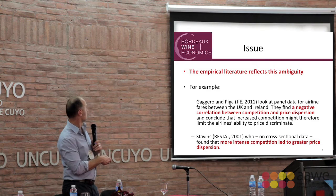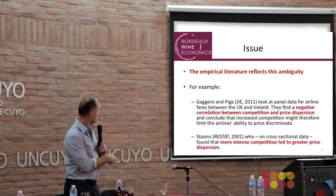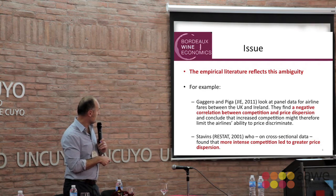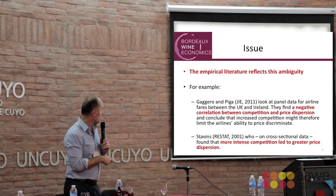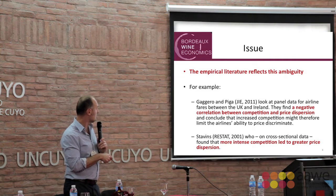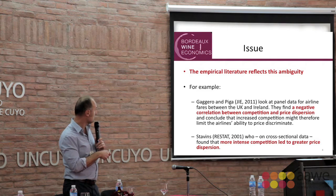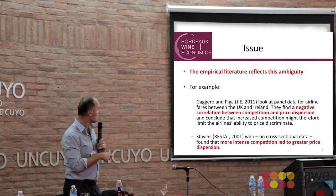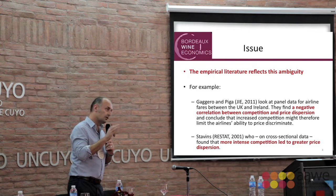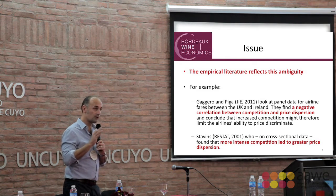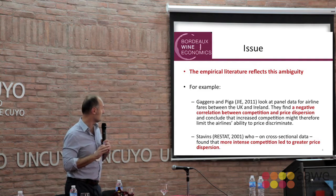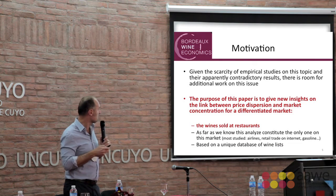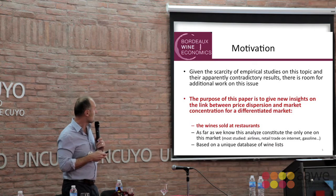In this literature, I just took two examples about the airlines market. In this paper by Stavins in the Review of Economics and Statistics in 2001, more intense competition led to greater price dispersion. But in the same market — airline tickets — a negative correlation exists between competition and price dispersion. So the theoretical and empirical link is not so clear, and there is room for additional work on this issue.